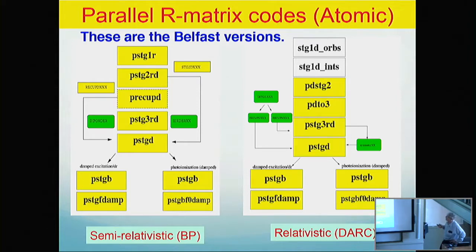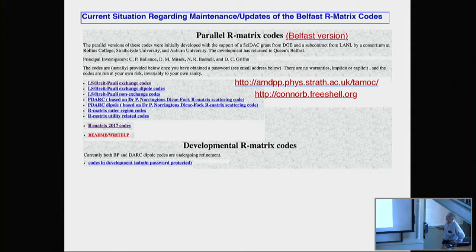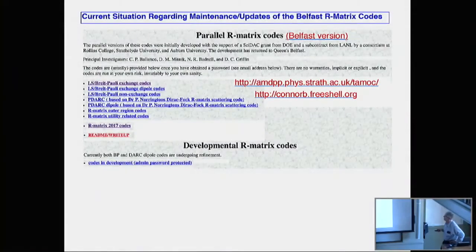This is the Belfast version — it's a multi-stage code. These are not short codes. They have all these states; you calculate radial integrals, angular integrals, you recouple, you calculate the Dirac-Fock Hamiltonian, and then you can calculate a whole bunch of things. They also have a parallel version, a relativistic Breit-Pauli and Dirac R-matrix atomic collision code. The codes are downloadable — if you go to Nigel Badnell's website you can get it directly. These codes are downloadable, ready to use, and free.